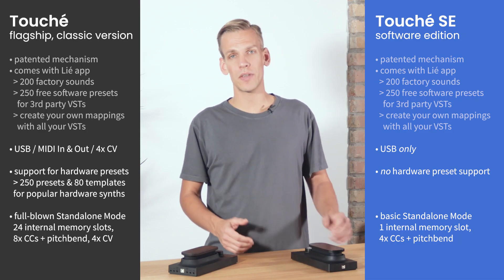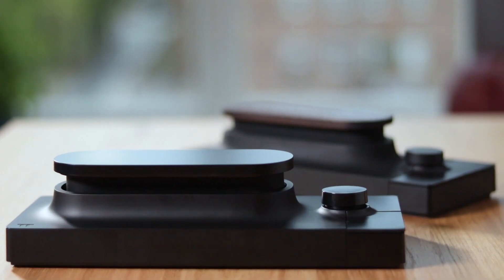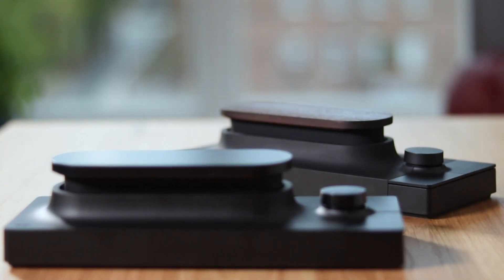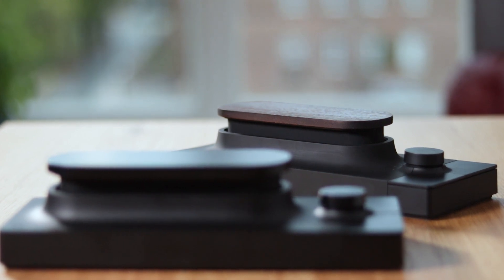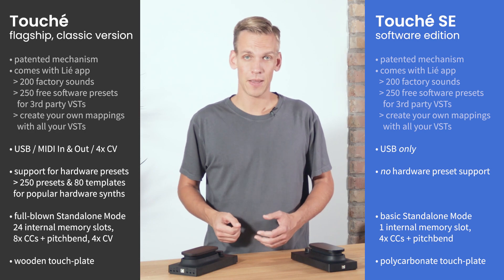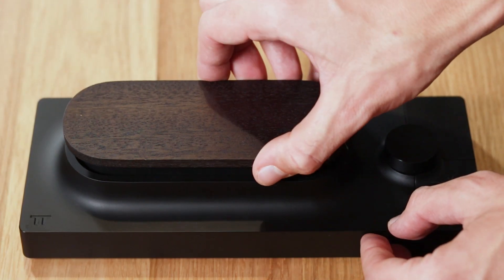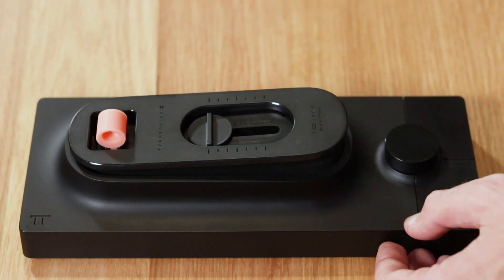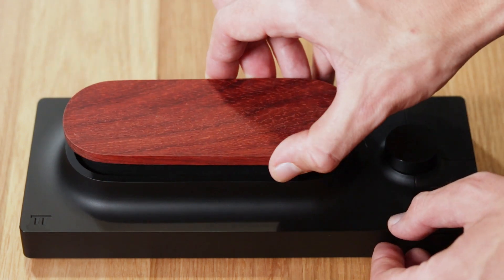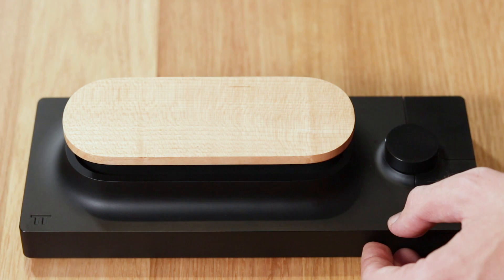Perhaps the most obvious difference between the two models is that Touche SE features an all-black polycarbonate touchplate, whereas the classic Touche features a touchplate made from real wood — tinted mahogany, to be precise. If you're interested in upgrading the touchplate of your Touche SE, you can totally do so. Just browse the range of touchplate materials listed on our website. They fit both models.